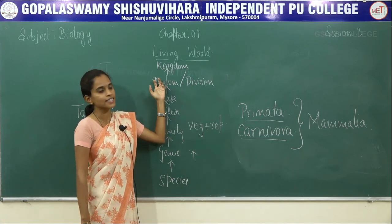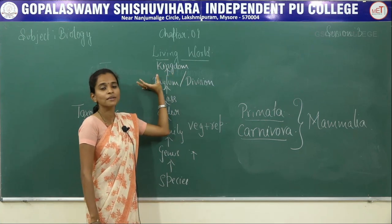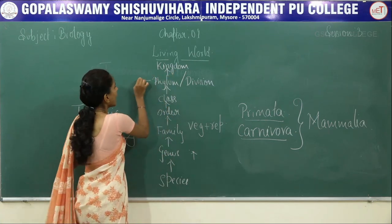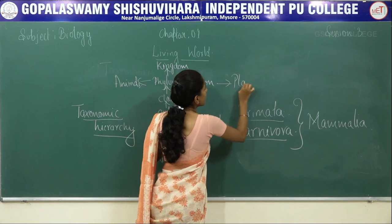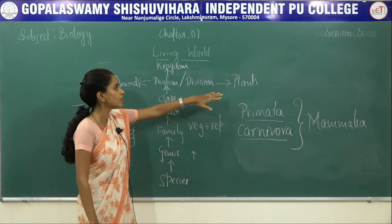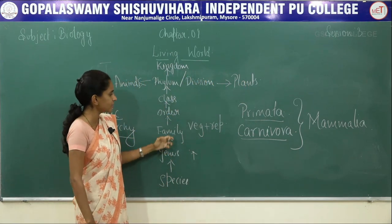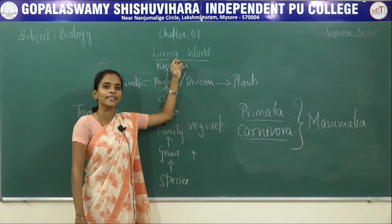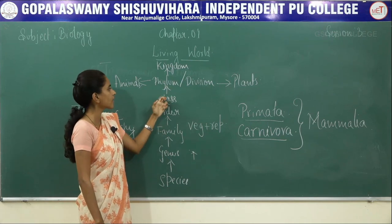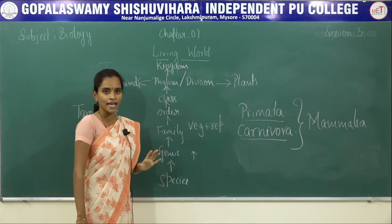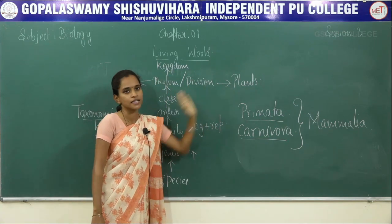Above class, the next level is phylum or division. For plants, the hierarchy uses division: species, genus, family, order, class, division, and then kingdom. For animals, it uses phylum: species, genus, family, order, class, phylum, and then kingdom. So phylum is the representation for animals, while division is the representation for plants. Both division and phylum include all the different categories of classes within them.